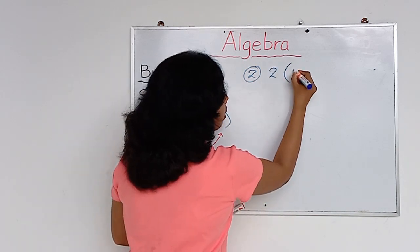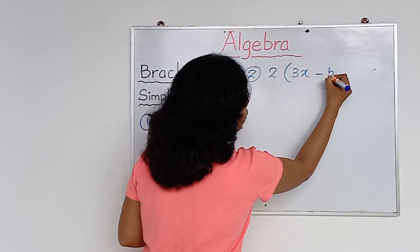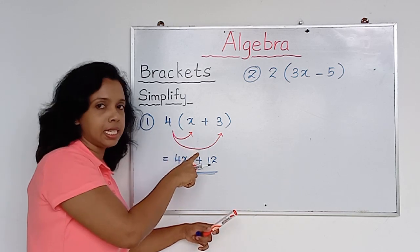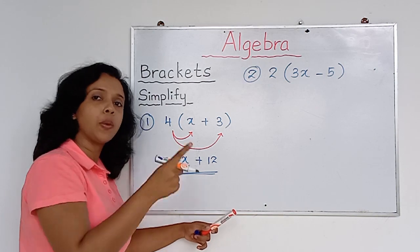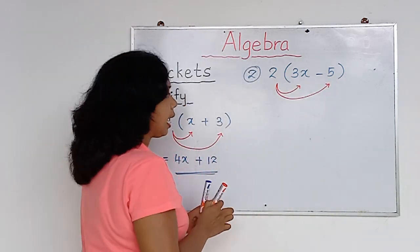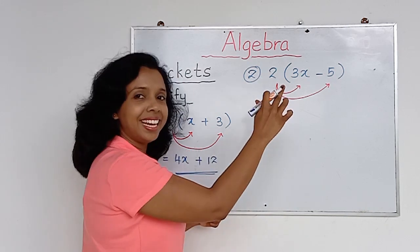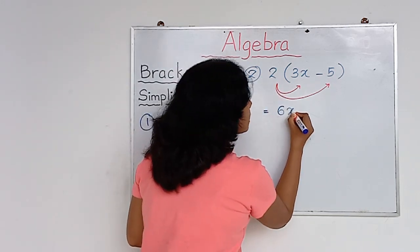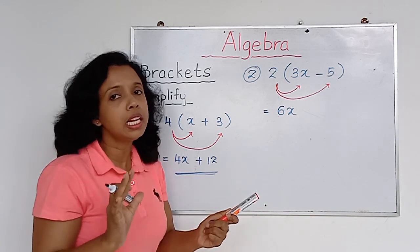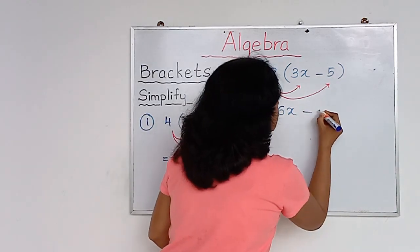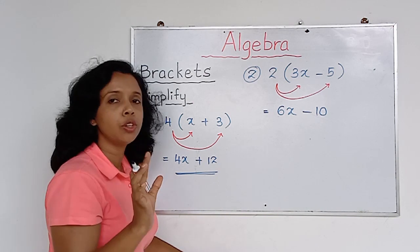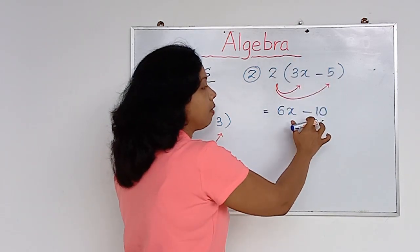Question number two: 2 times bracket (3x − 5). You do the same thing. Note: in an exam you don't need to show arrows — I drew arrows just for your understanding. So: 2 times 3x is 6x, then 2 times minus 5 is minus 10. Pay attention to the sign: 2 times minus 5 equals minus 10. The answer is 6x − 10.